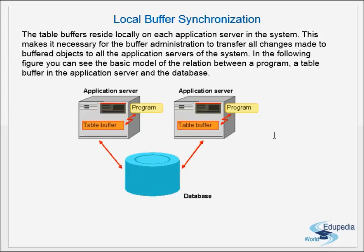The database is shared among the different instances. Each application server has its own table buffer. Whenever a program accesses some data for the first time, the first read is done from the database. The data is brought and kept in the table buffer, so from the second time onwards whenever the same data is accessed it is read from the table buffer and not the database.